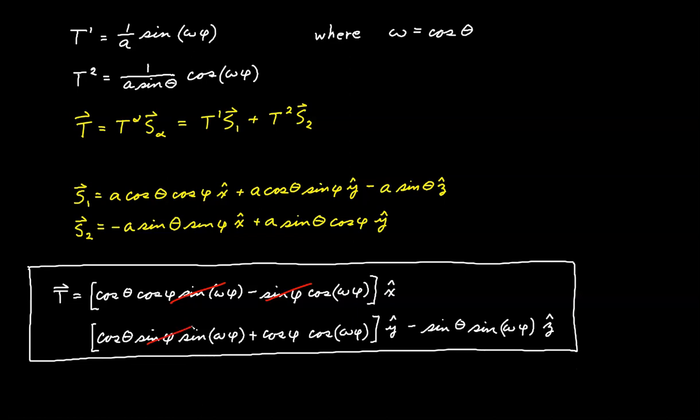This is zero, and this one right here is equal to one. That means that when phi is equal to zero, our vector T is equal to y hat. It's a unit vector pointing in the y hat direction. That's the initial condition for our vector.